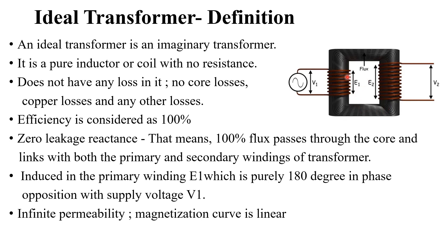The induced EMF in the primary, that is E1, will be purely 180 degrees out of phase with the applied voltage V1. And the permeability of an ideal transformer will be infinity or it will be constant, so that the magnetization curve will be linear.